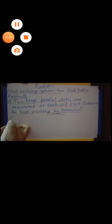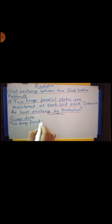For the given data: two large parallel plates whose temperatures T1 is equal to 500 Kelvin and T2 is equal to 600 Kelvin. These are the given values.